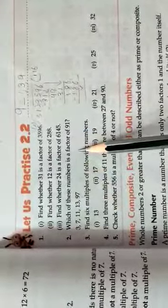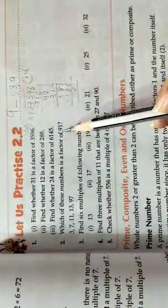3 se ho ga ya nahi ho ga, 7 se isko divide karoge, dekho. Ho jayega, toh means 7 iska ek factor hai. Then 11 se, 13 se, 97 se, aap inko divide karoge. Agar complete divide ho jata hai, that means yes, it is a factor of 91. Otherwise, no.